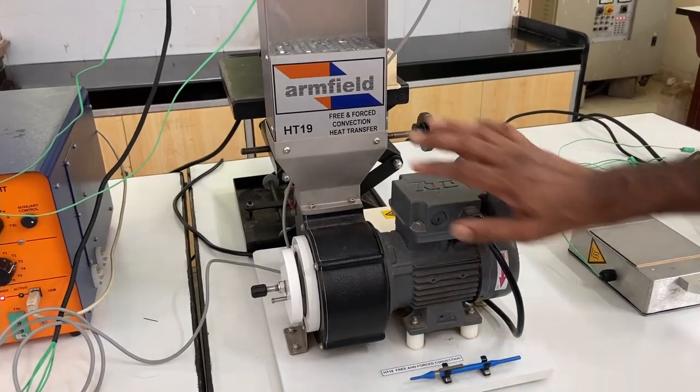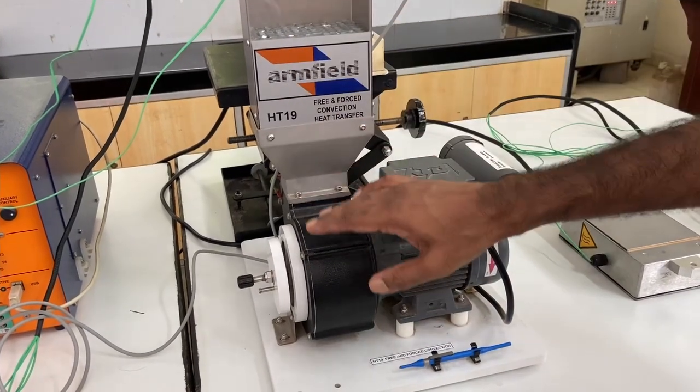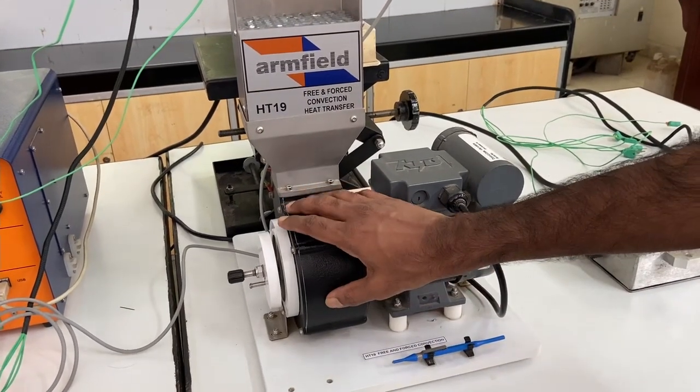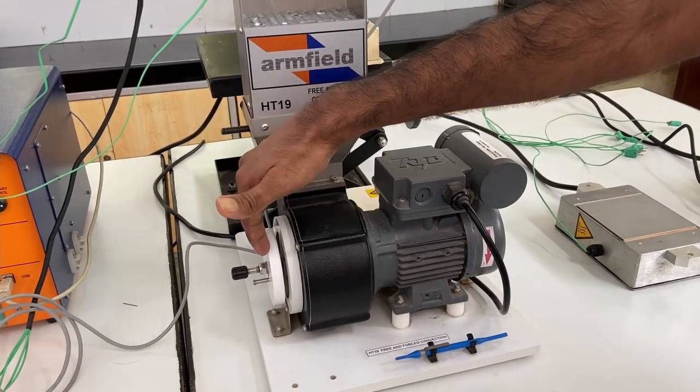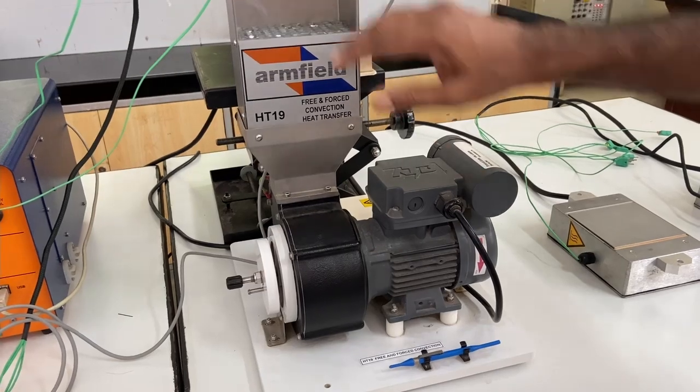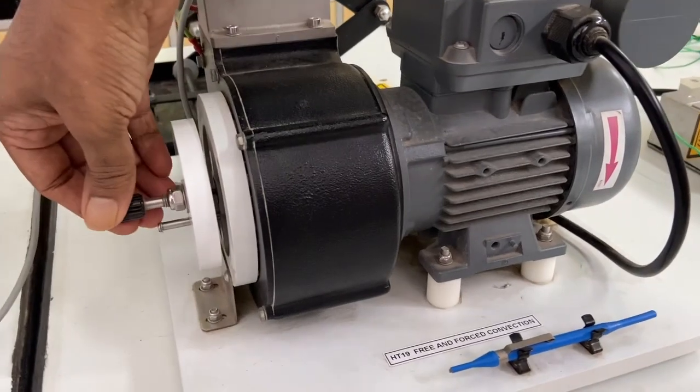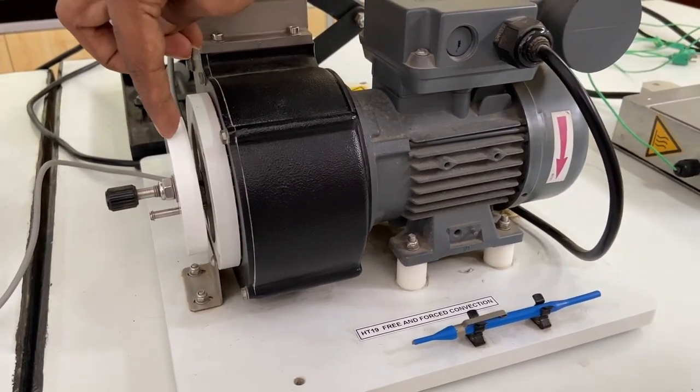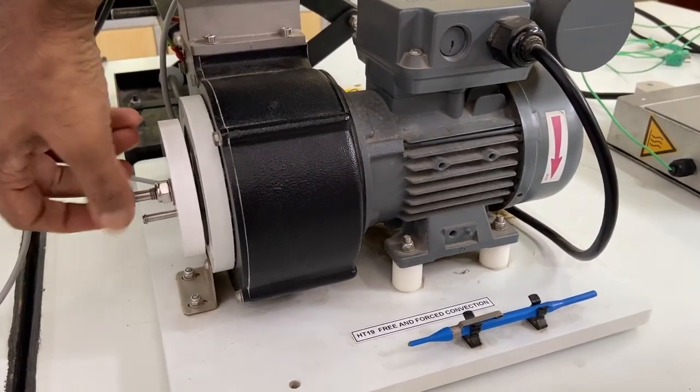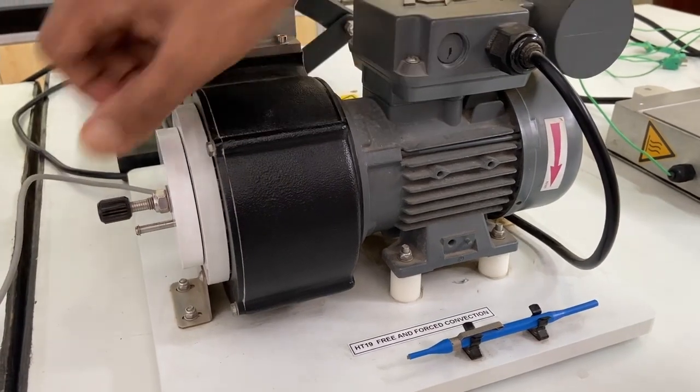For the forced convection setup, this fan here blows air into the duct from the bottom. Let us see how to control the flow of air. The centrifugal fan sucks air from this side and blows it into the channel above. The inlet side flow rate is controlled using this disc, which acts like a lid. It is called a throttle plate. We can adjust the screw to alter the distance between the disc and the inlet section. This will increase or decrease the flow rate.